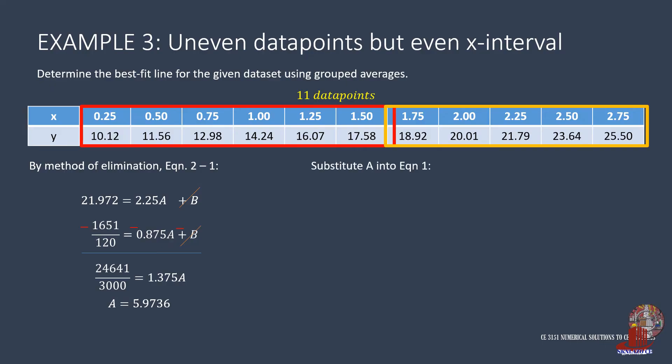Substitute this value into the first equation and get 1651 over 120 is equal to 0.875 times A, which is 5.9736 plus B. By multiplication then transposition, B is then solved as 8.5314. With A and B known, the best fit line for the data set is Y as 5.9736X plus 8.5314.